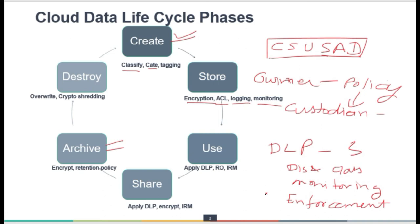The first stage of DLP is to discover and classify the data. For example, if data in use is over email or during transition, and the tool finds the data is sensitive, it will mark and classify it as sensitive, keeping monitoring of both ingress and egress-based traffic. The cloud-based DLP solution is called DLP as a Service, and several cloud providers are integrating it as a service.